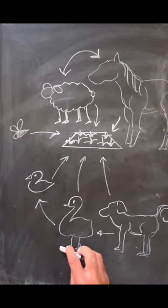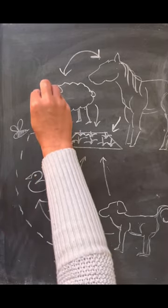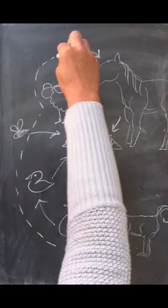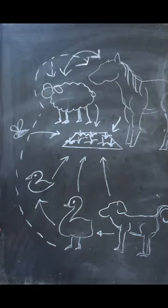Now in our pasture rotation system, the flock comes through after the sheep and the horses have grazed. As they go through the fields, they actually blow apart the manure piles looking for insects, and by doing so they also ingest parasites that affect the sheep and the horses.